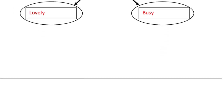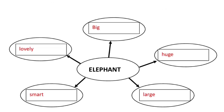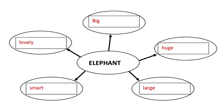The next one given is 'elephant.' Elephant is a noun. For elephant, the describing words could be: big elephant, huge elephant, large elephant, small elephant, lovely elephant — like this. You have to write your own describing words, your own adjectives for these nouns.